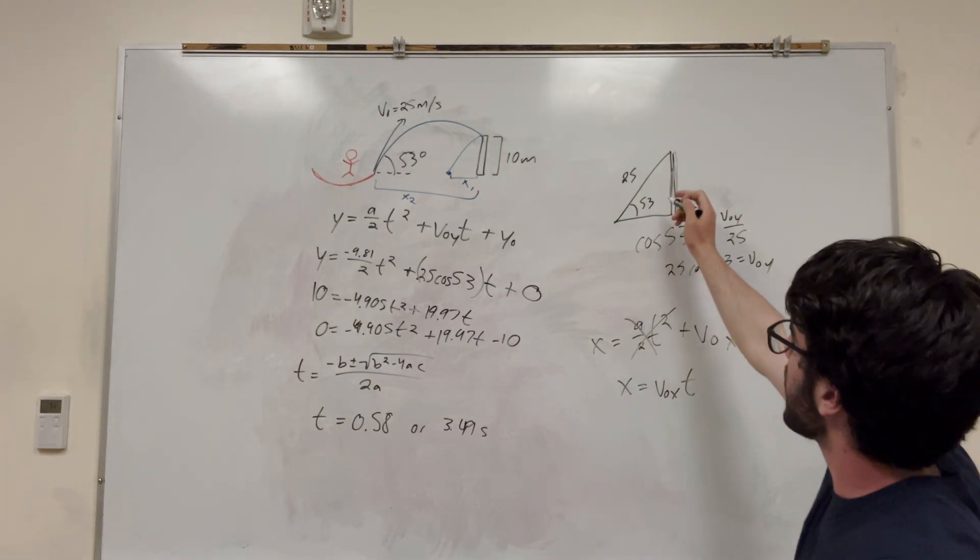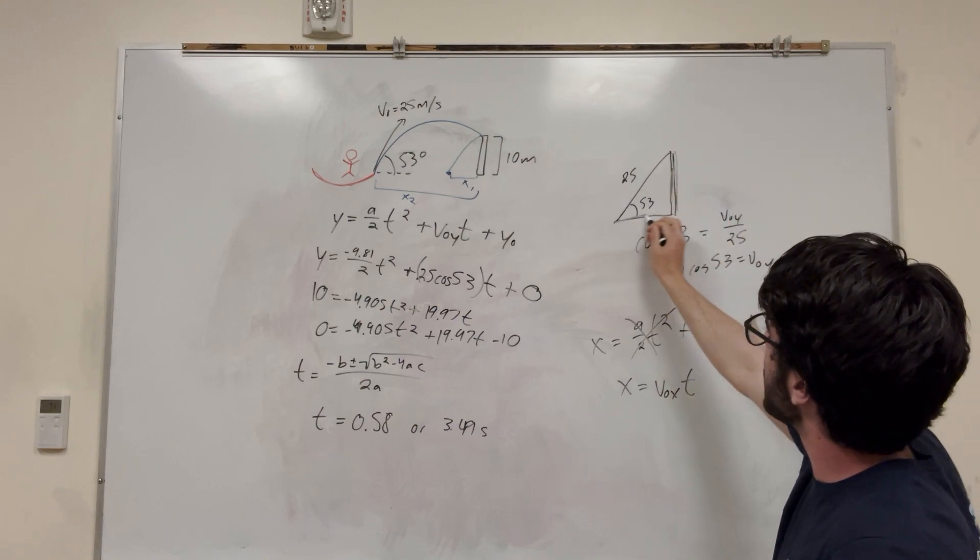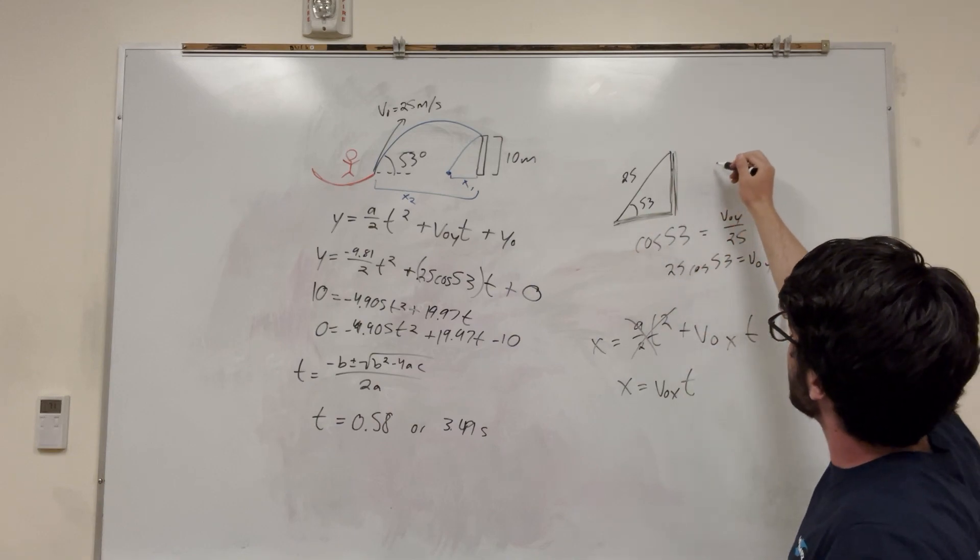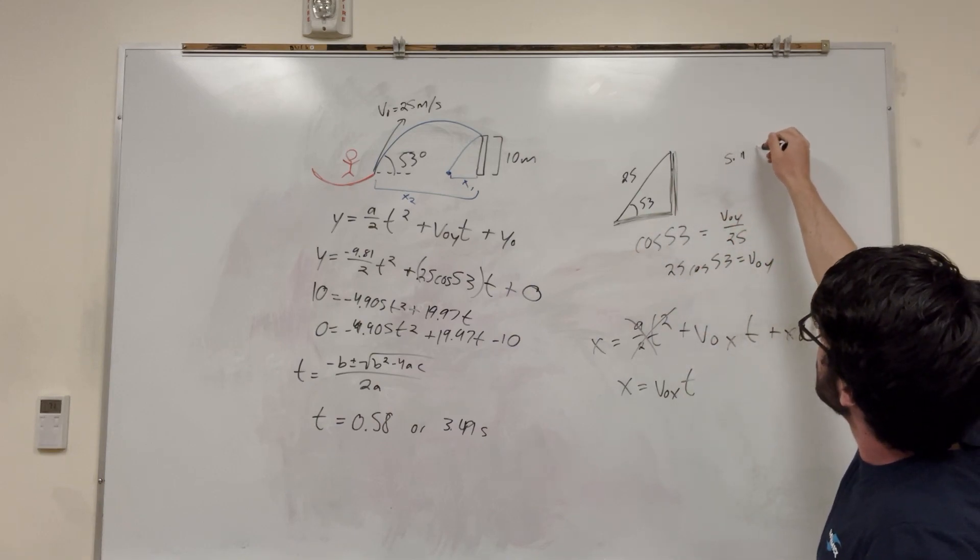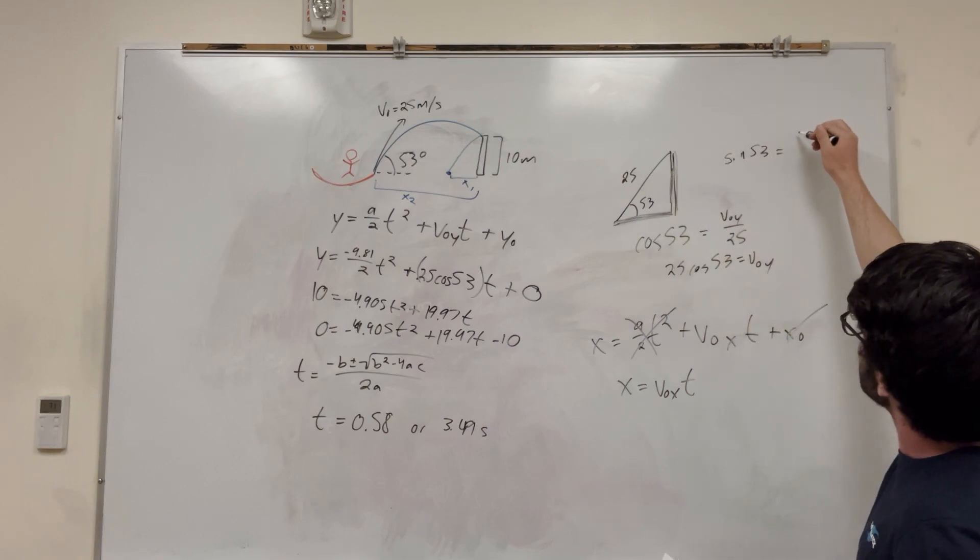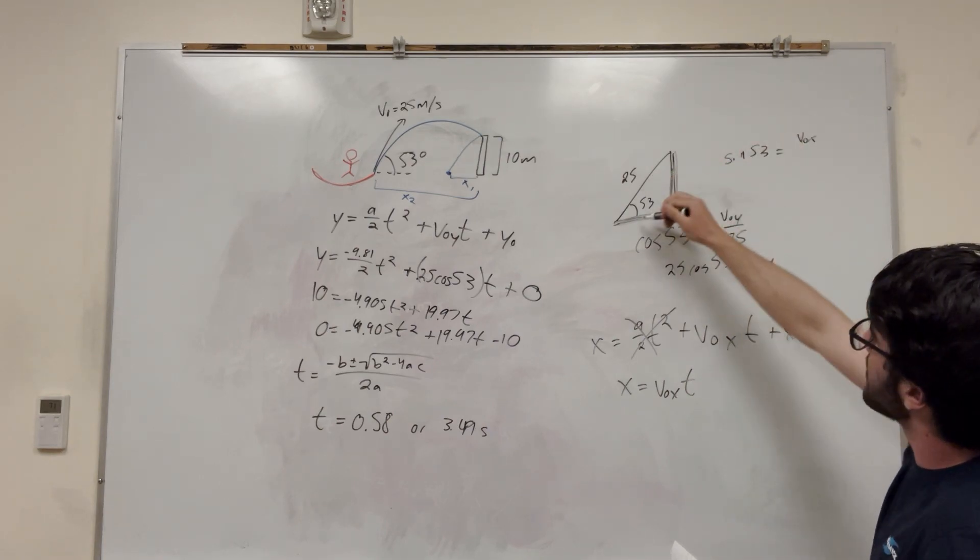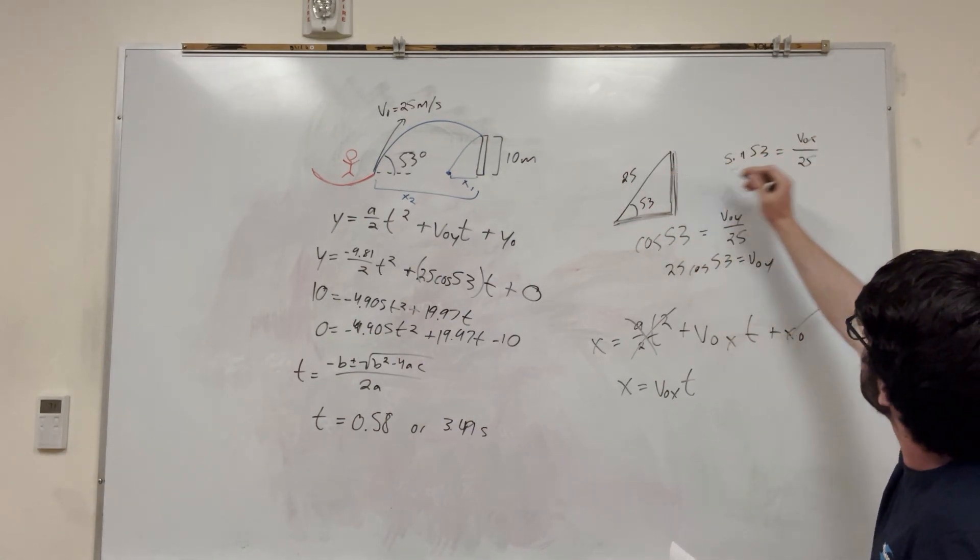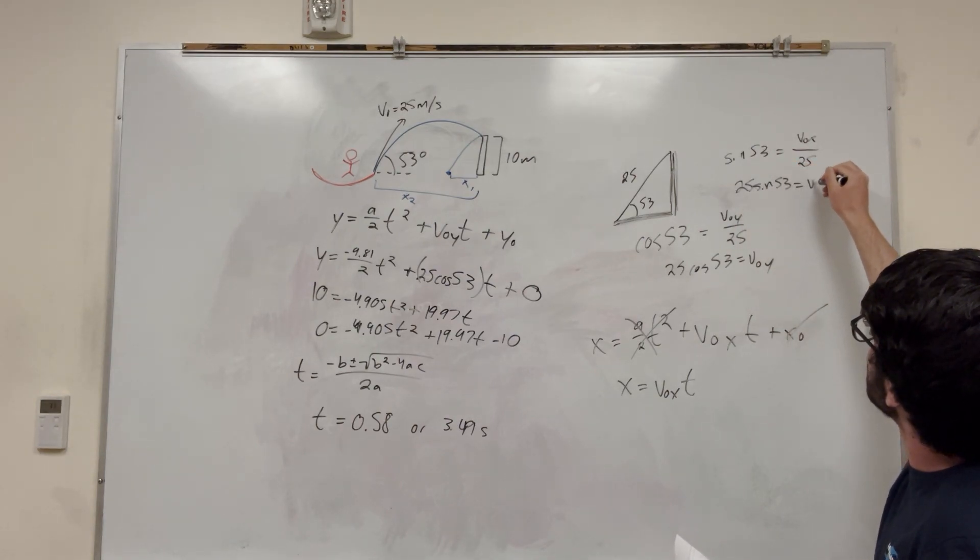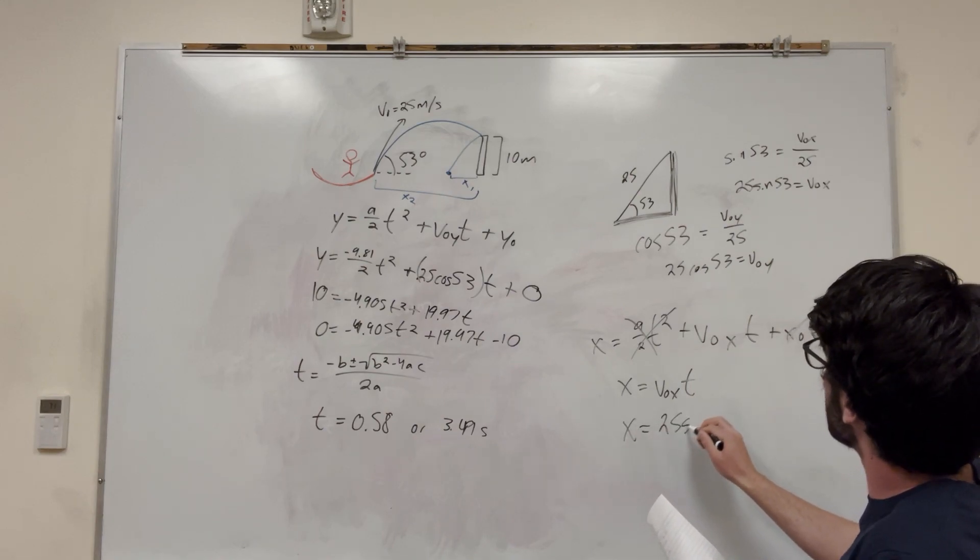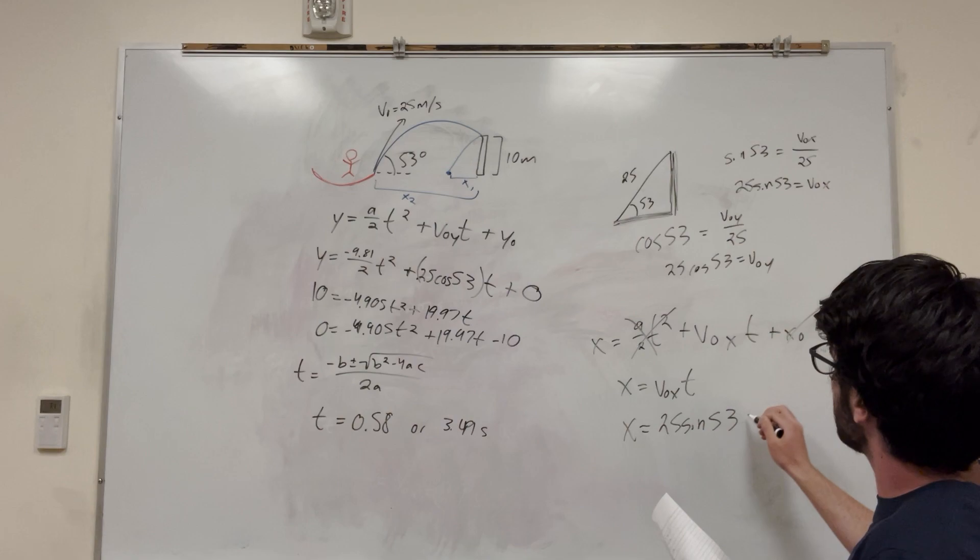So similar to what we did here, we're trying to instead find this, we're trying to find this line. This is v naught in the x direction. So, we can go and say that, you know, sine of 53 is equal to adjacent over hypotenuse. So this is v naught x, right? This is the velocity in the x direction. And then this is over 25 over the hypotenuse. So again, you move it over 25, sine 53 is equal to v naught x.